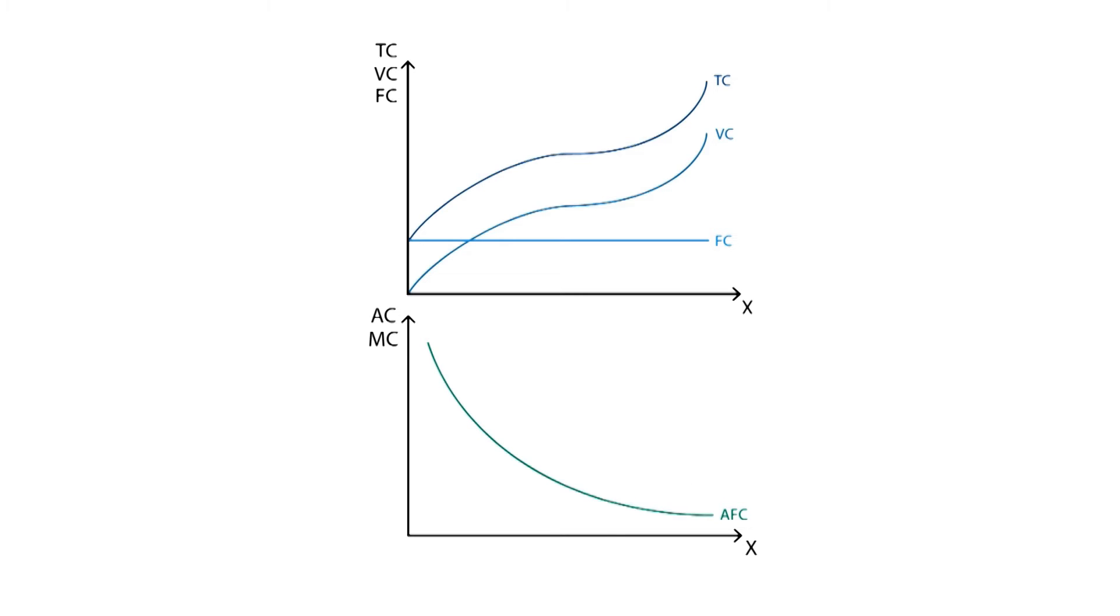We now draw in the lower graph the marginal cost curve, which is drawn by analyzing the slope of the total cost curve in the upper graph. The point where the marginal cost is lowest matches the point where the slope of the total cost curve is equal to zero.